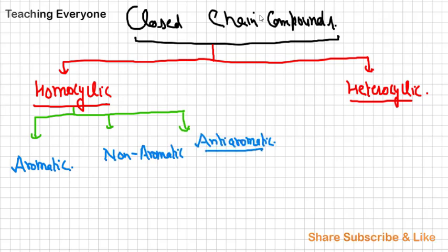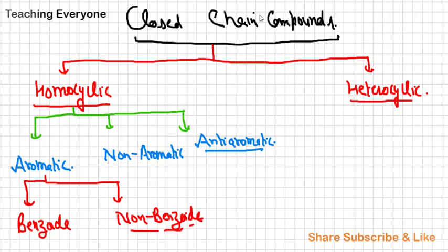Now these aromatic compounds are further classified into two categories: benzoid and non-benzoid. So what are benzoid compounds? At least one benzene ring is called benzoid. Non-benzoid, which do not contain benzene ring. That portion is important for competitive point of view. For IIT-JAE, these are most important.